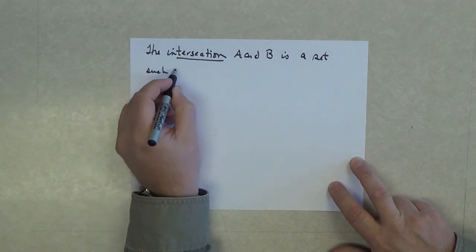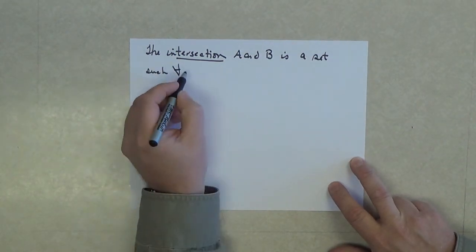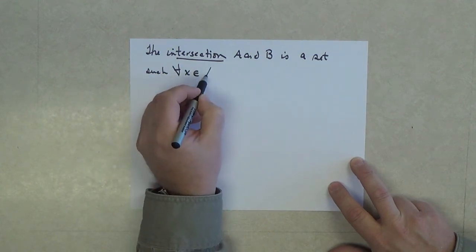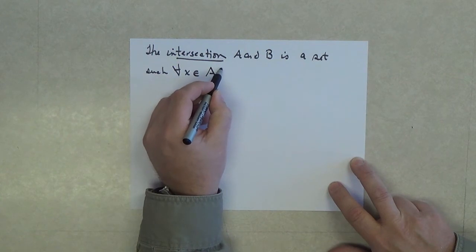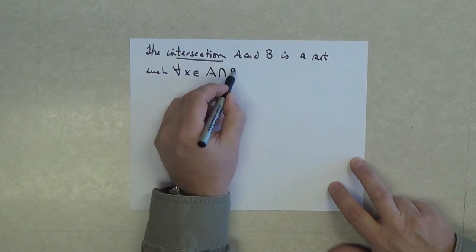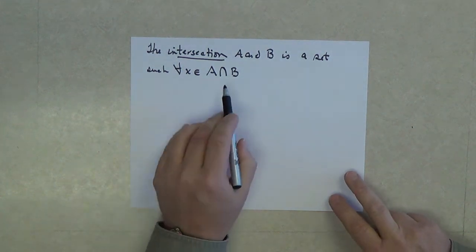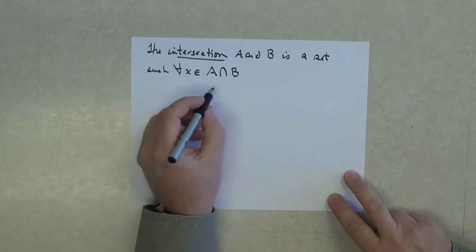Such that, all the X's for every X, an element of the intersection.